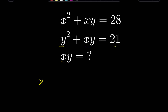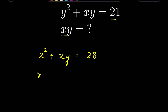We have x squared plus x times y is equal to 28. We can take x common and write x(x + y) = 28. Let this be equation 1.